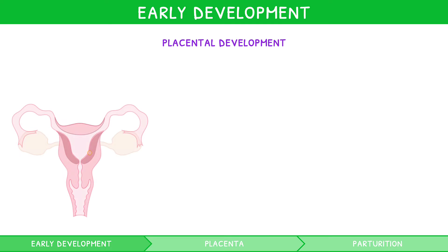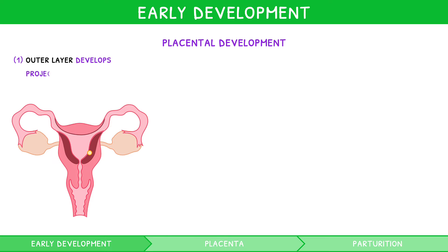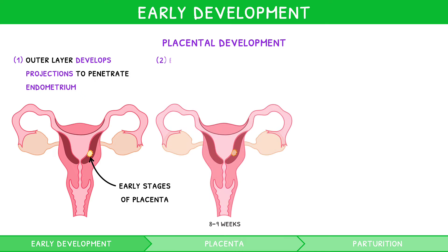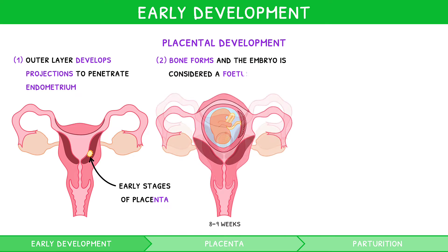During early placental development, the outer layer of the embryo develops finger-like projections on its surface, which penetrate the endometrium, allowing for exchange of food and oxygen with the mother's blood. These projections are the early stages of a structure known as the placenta. By 8–9 weeks post-fertilization, bone tissue forms and the embryo is now considered a fetus.